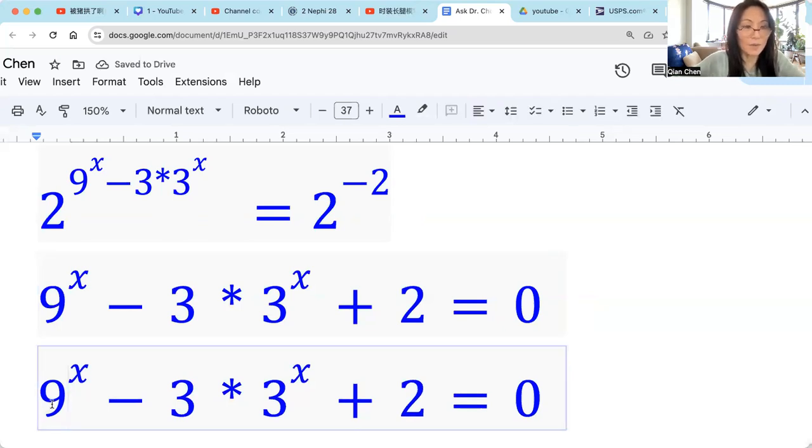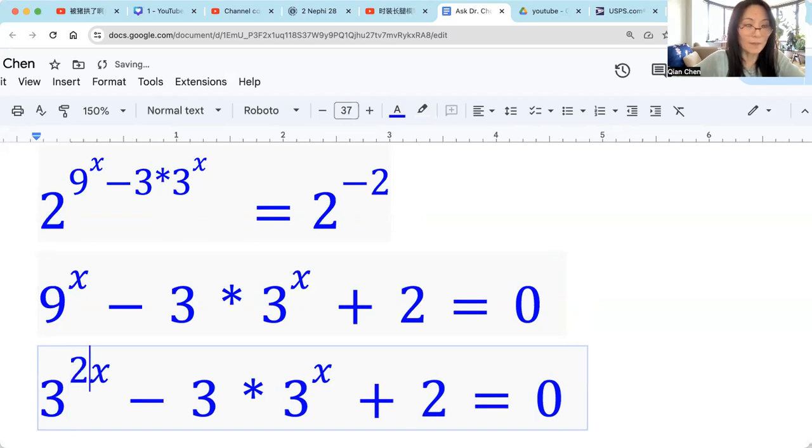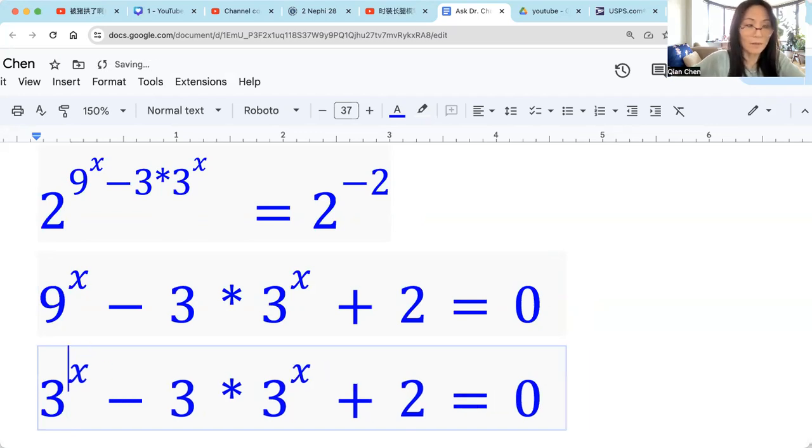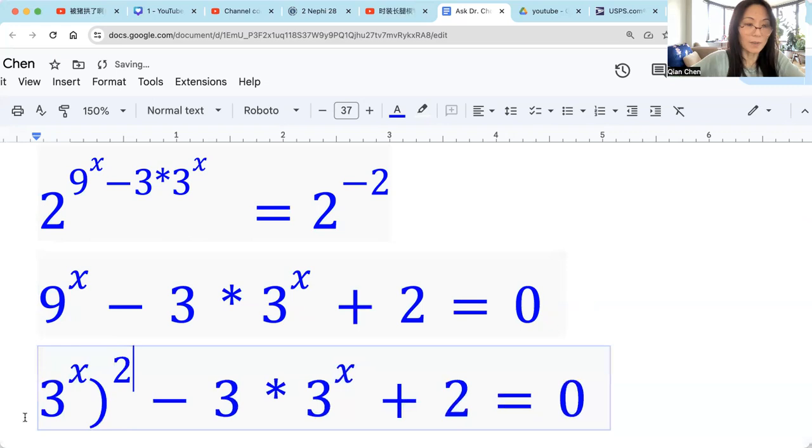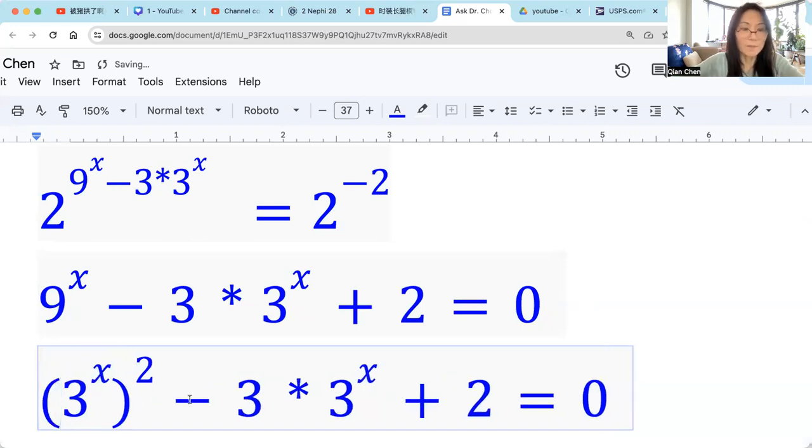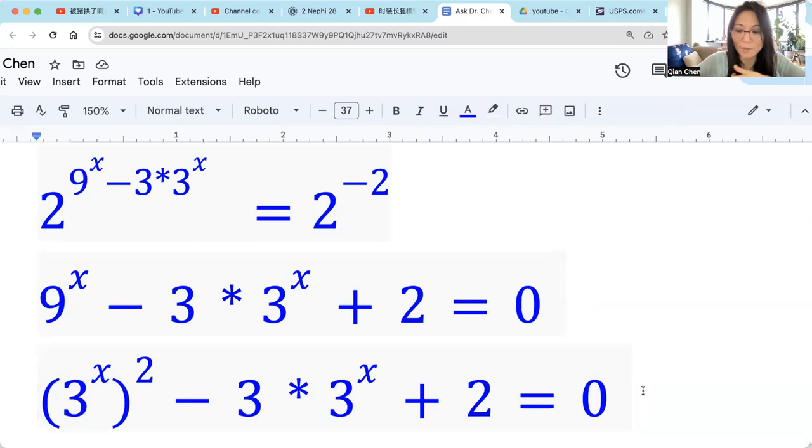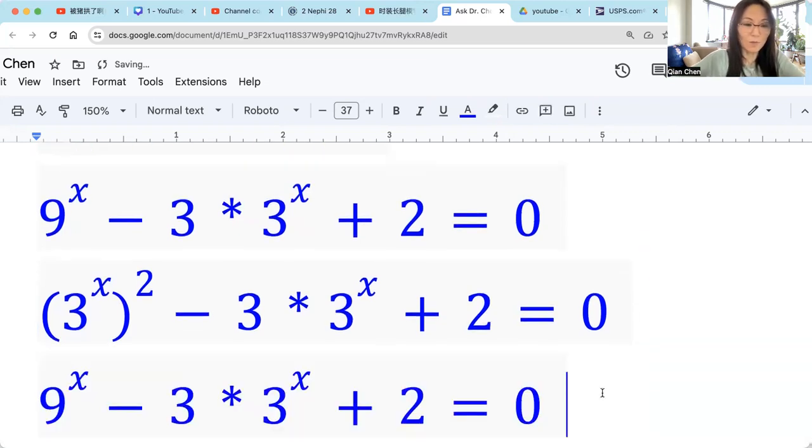So 9 is 3 squared, right? So that means I can rewrite 9 raised by x to be 3 raised by 2 times x. Or I can even write this as 3x raised by square, right? In this way, I see I have something quadratic. Think about 3 raised by x to be y. So I have y squared minus 3y plus 2. This is factable. We can factor this into two factors.